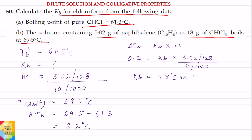The solute is naphthalene and it is dissolved in the solvent chloroform. Weight of solvent is 18 gram and the solution boils at 69.5 degree centigrade. So given data is: boiling point of pure solvent is 61.3 degree centigrade, Kb we have to find out, boiling point of solution is 69.5 degree centigrade, weight of solute and weight of solvent are given.